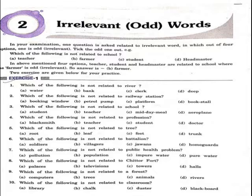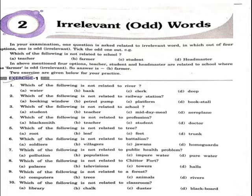Seventh question: which of the following is not related to public health problems? Options are pollution, population, impure water, pure water. The right answer is pure water. Pure water is not a problem.